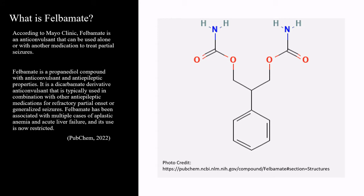According to Mayo Clinic, felbamate is an anticonvulsant that can be used alone or with another medication to treat partial seizures. Felbamate is a propandiol compound with anticonvulsant and antiepileptic properties. It is a dicarbonate derivative anticonvulsant typically used in combination with other anti-epileptic medications for refractory, partial onset, or generalized seizures. Felbamate has been associated with multiple cases of aplastic anemia and acute liver failure, and its use is now restricted.